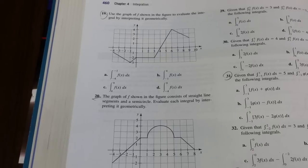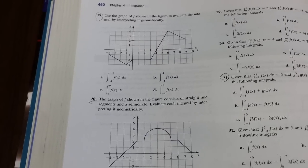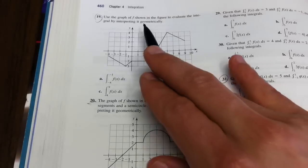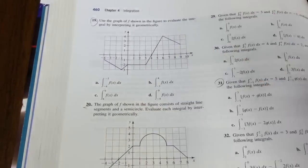Time for a thrilling problem from section 4.4. This is number 19 on page 460, and it says use the graph shown in the figure to evaluate the integral by interpreting it geometrically.